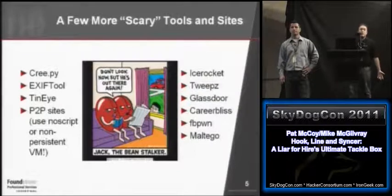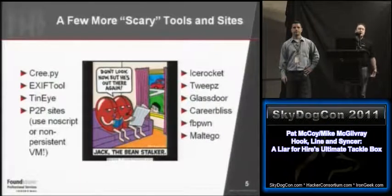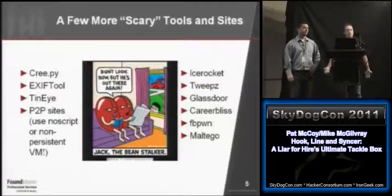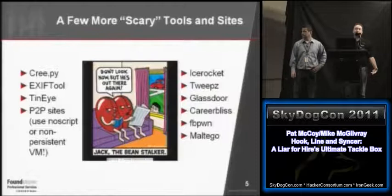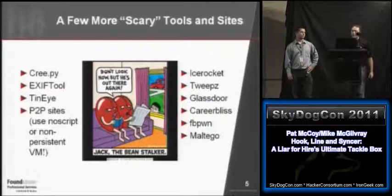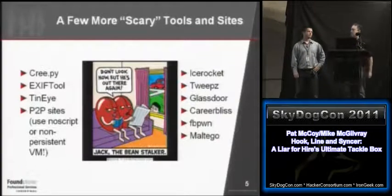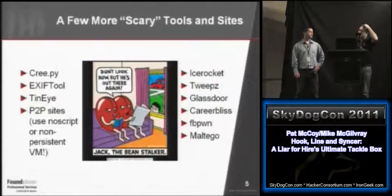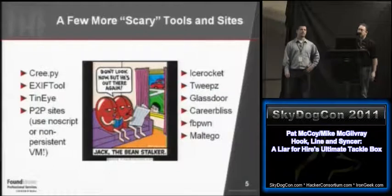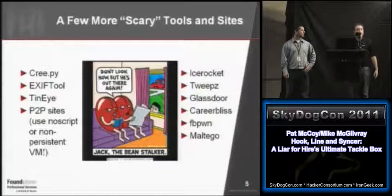Once you have images, you can find more information using a search engine like TinEye — it's an image search engine. You feed it an image and it finds every other instance of that image, or images that look similar, online. So if I have a photo from one website, I might find out what other websites you're on, or draw a correlation between your LinkedIn bio photo and your Facebook photo. There are also P2P file sharing sites and text file dump sites like Pastebin, where you can trawl for specific strings of data you might be interested in.